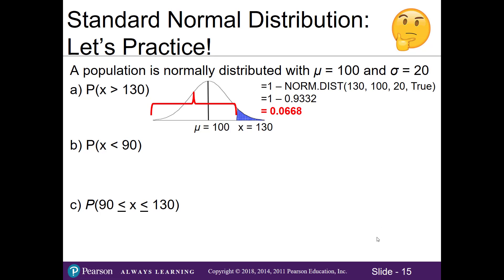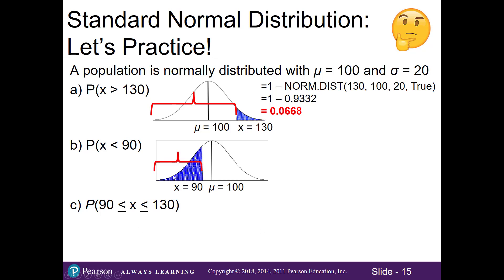Part B: the probability that x is less than 90. Since 90 is to the left of our mean of 100 and we want a less-than probability, Excel's norm.dist function gives us exactly the shaded area we want without needing the complement rule. We plug in norm.dist(90, 100, 20, true) and get 0.3085 as the probability that x is less than 90.